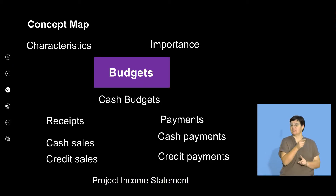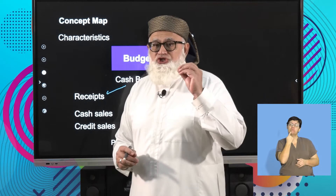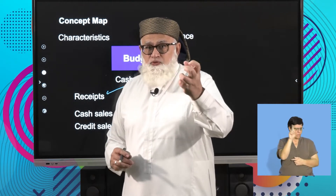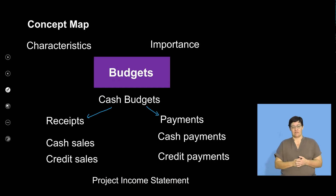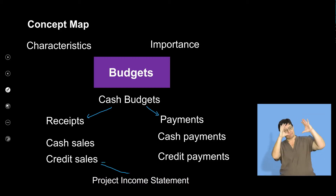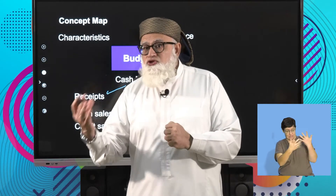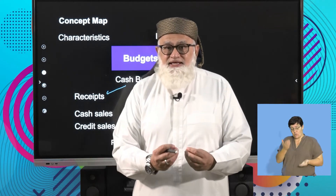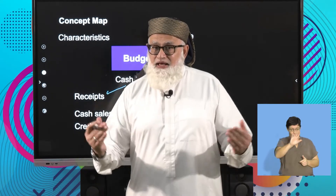Remember what we've done before. In budgets you have your receipts and your payments. When you're doing budgets, you think cash — all the cash that we are receiving and all the cash that we are paying out. When it comes to your projected income statement, you're looking at incomes that you have earned as compared to expenses that you have incurred. Look at the terminology so you know exactly what it refers to.